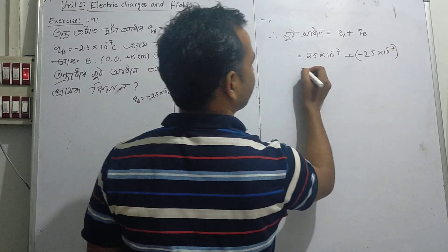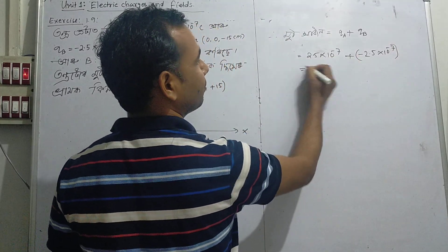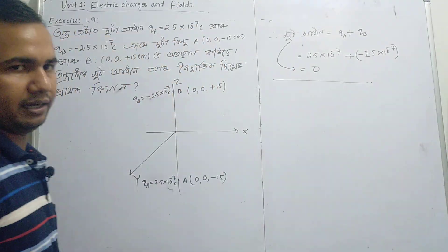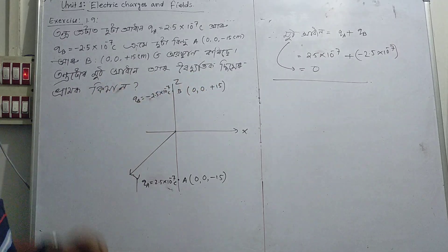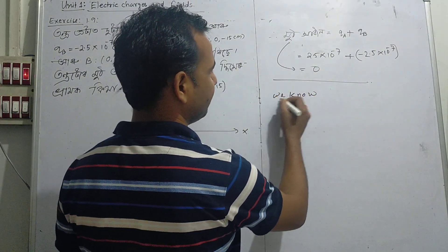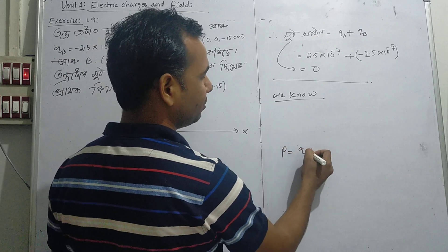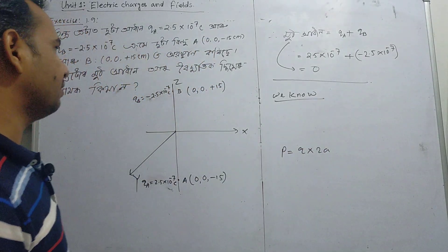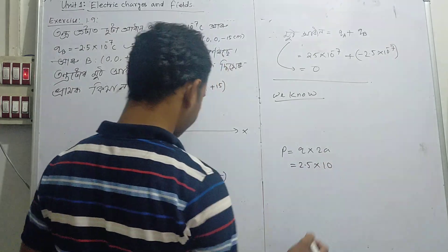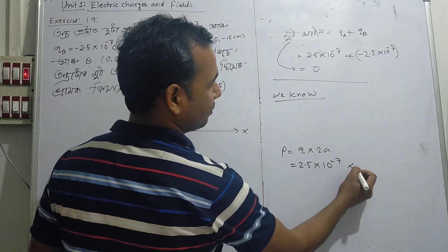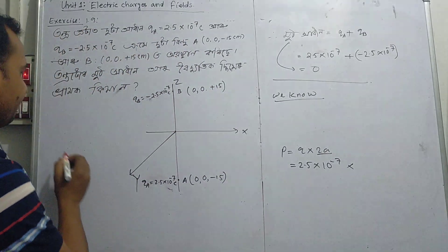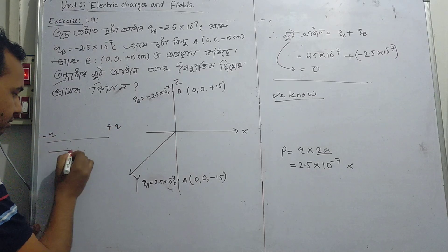Plus and minus together equal to zero. Next, we know the dipole moment formula. The formula is P equal to Q into twice a. So P = Q × 2a, where 2.5 into 10 to the power minus 7 into twice a.